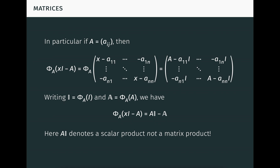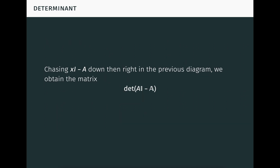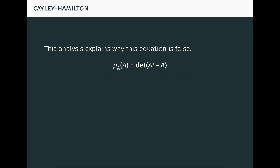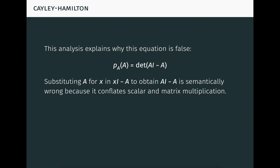A bold I is the result of taking the matrix product of A with each entry of the matrix of matrices bold I. Chasing the characteristic matrix of A down then right in the previous diagram, we obtain the matrix which is the determinant of A bold I minus bold A. The Cayley-Hamilton theorem says that this matrix is the zero matrix. This analysis explains why the equation in our original attempted proof is false. Substituting A for x in xI minus A to obtain AI minus A is semantically wrong because it conflates scalar multiplication and matrix multiplication.